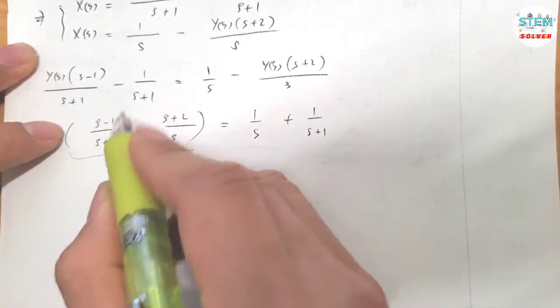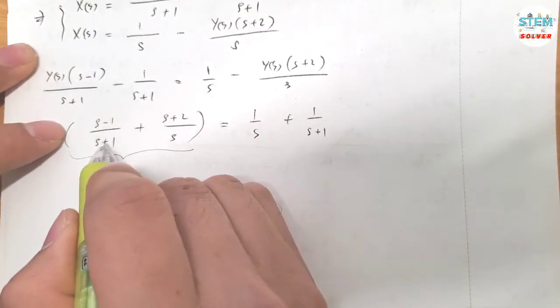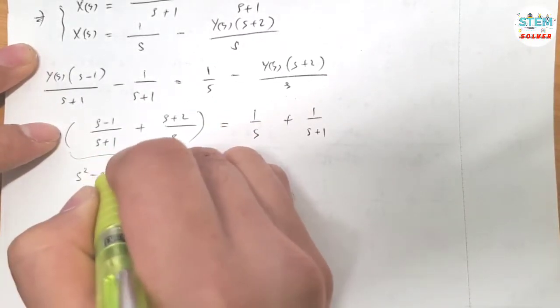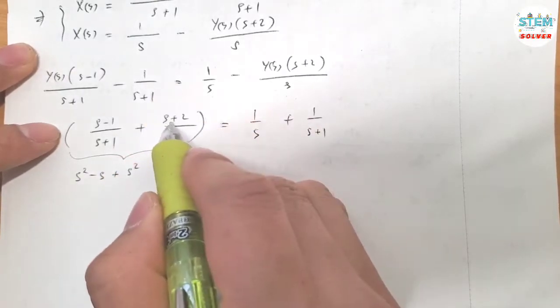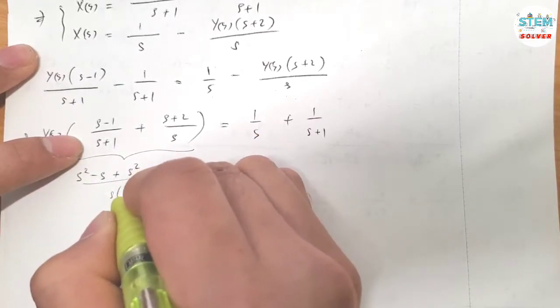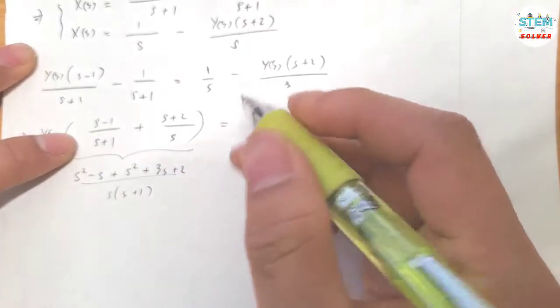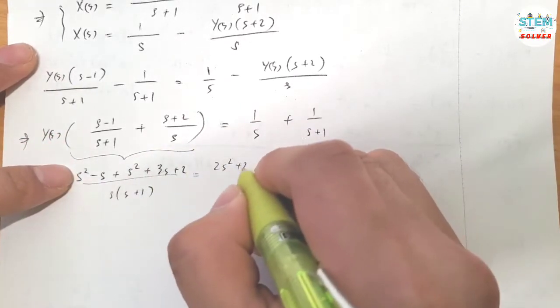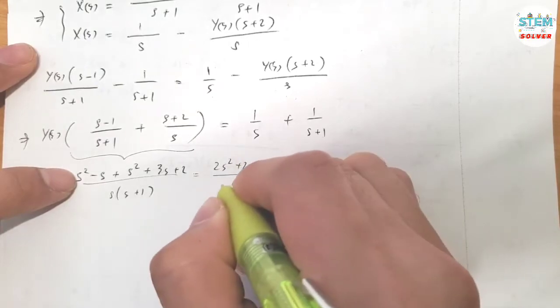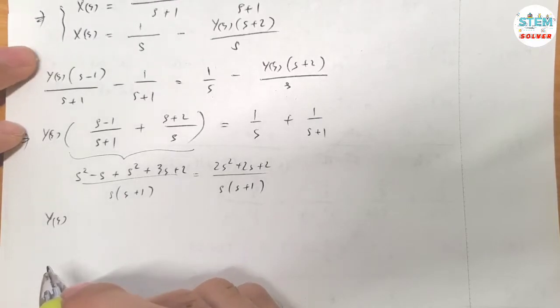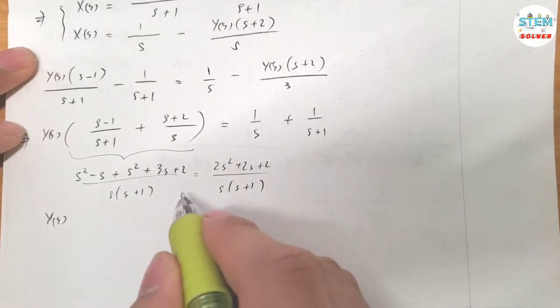So combine this together, multiply this by S and this by S plus 1. I have (S² minus S) plus (S² plus 3S plus 2) over S times (S plus 1). Similar to this, I have 2S² plus 2S plus 2.